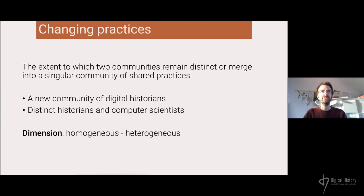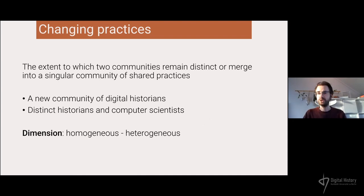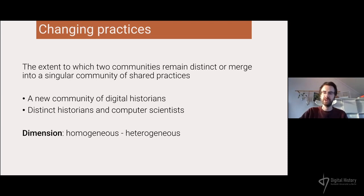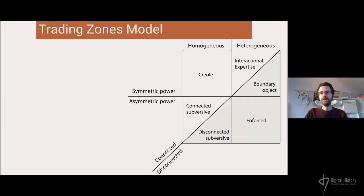The third dimension — changing practices — describes the extent to which two communities remain distinct or merge into a single community of shared practices. Does digital history lead to a new community of digital historians who are neither historians nor computer scientists but something in between? Or do collaborations still consist of distinct historians and computer scientists who come together and then go back to their own disciplines? I distinguish between a homogeneous trading zone where you can't say anymore who is who, and a heterogeneous collaborative trading zone.